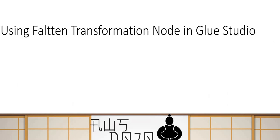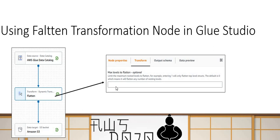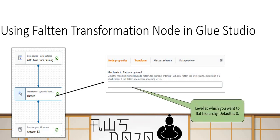You don't want data where cell values are still a JSON document. You want a simple tabular structure where first name and last name are two different columns, and email, home phone, and office phone are separate columns. That's where the Flatten transformation node in Glue Studio comes into the picture, and it is one of the simplest transformations to use in Glue Studio.